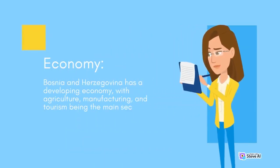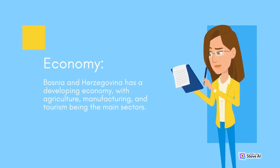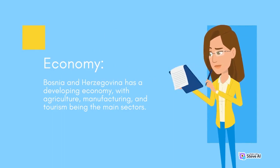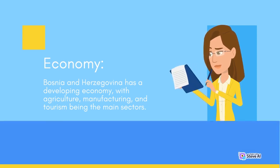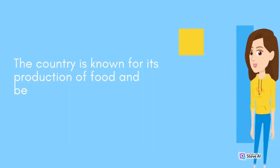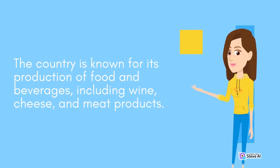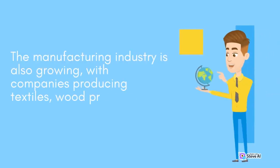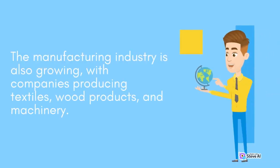Bosnia and Herzegovina has a developing economy, with agriculture, manufacturing, and tourism being the main sectors. The country is known for its production of food and beverages, including wine, cheese, and meat products. The manufacturing industry is also growing, with companies producing textiles, wood products, and machinery.